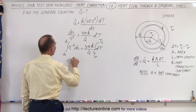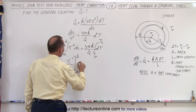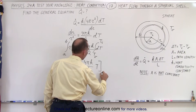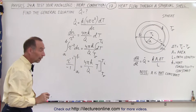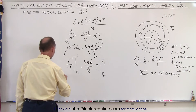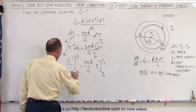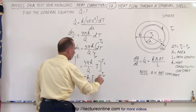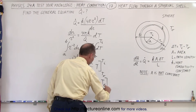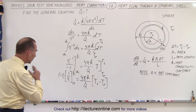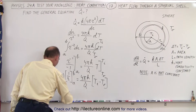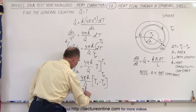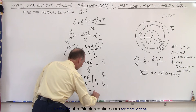Let's integrate. That gives us R to the minus 1 divided by the new exponent, evaluated from A to B, equals 4πK divided by Q dot, times the temperature evaluated from T outside to T inside. Bringing the negative 1 out, we rewrite this as negative 1 times 1 over R from A to B, equals 4πK over Q dot, multiplied by T inside minus T outside. Plugging in the upper and lower limits, we get negative 1 times (1 over B minus 1 over A) equals 4πK over Q dot times (T inside minus T outside).